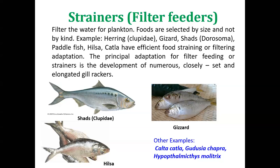When water passes through the fine gill rakers, they strain out small planktons — zooplankton or phytoplankton. In this type of fish, food is selected by size. Several fishes are plankton feeders or filter feeders: hilsa, katla, gizzard shad, Gudusia chapra, Hypophthalmichthys molitrix, and others are examples of strainers or filter feeders.